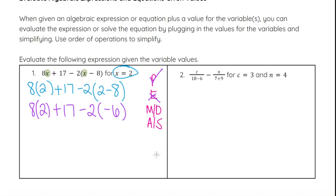There are no exponents to worry about, so we move on to multiplication and division. There is no division, but we do see 8 times 2 and negative 2 times negative 6. We can multiply those together. 8 times 2 is 16. We still have plus 17. And negative 2 times negative 6 is positive 12, so plus 12.